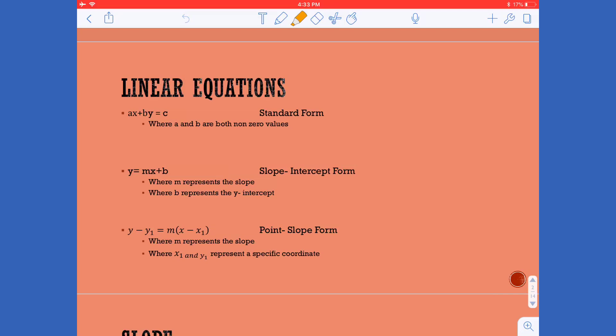We have standard form, slope intercept form, and point slope form. Each of these provides different information and we can actually use them in different situations to find other information we may need about a line.